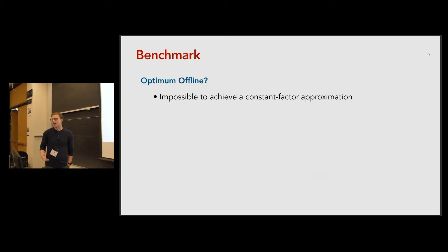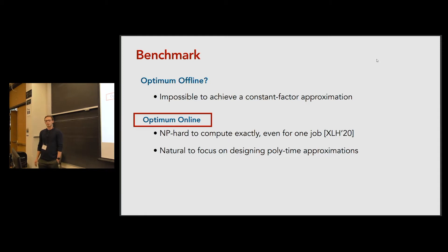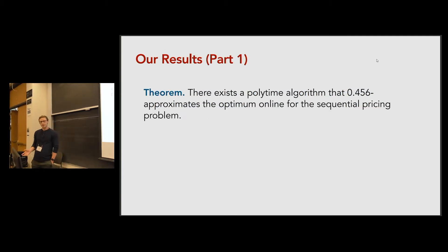When evaluating an algorithm for this problem it's important to define the right benchmark. I wanted to quickly mention that although for many online matching problems, for many online matching problems the optimum offline is a well-studied benchmark. In this case it's actually impossible to achieve any sort of approximation. So we take the optimum online algorithm as our benchmark. It's well-defined and actually NP-hard to compute exactly even if there's only a single job, a result of Shao et al. Based on this it's natural to focus on designing polynomial time approximations to the optimal online policy. So that's what we do and I'm going to state our results in two parts. Our first result is that there exists a polynomial time algorithm for this problem that gives a 0.45 approximation to the optimum online.